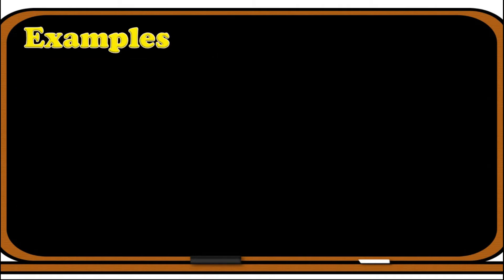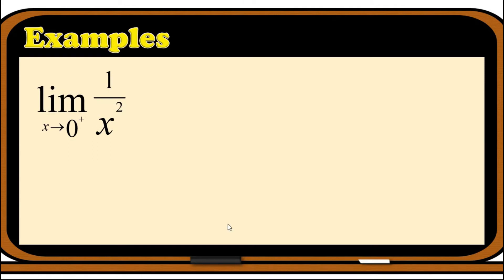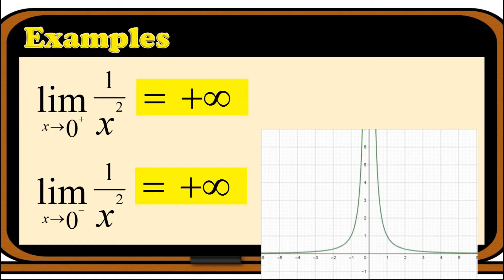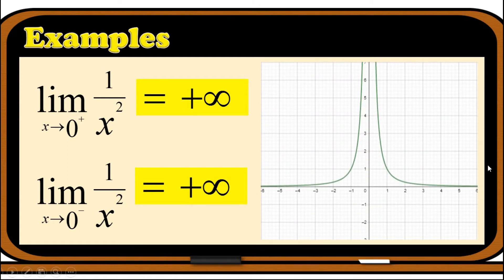For example, the limit of 1 over x squared as x approaches 0 from the right: the exponent is a positive even number and we approach from the right, so the answer is positive infinity. For the limit of 1 over x squared as x approaches 0 from the left: since n is even, the answer is still positive infinity. We can verify using the graph — approaching 0 from either side, the graph goes upward continuously.